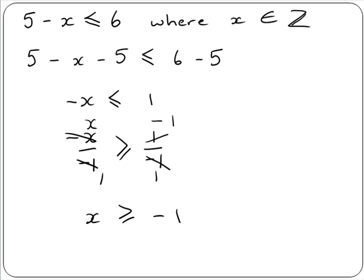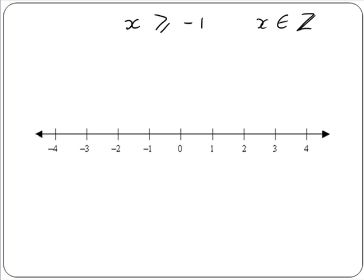Finally, we represent our solution on a number line. Our solution is x is greater than or equal to minus 1, and x must be an element of the integers. Starting at minus 1 — because minus 1 equals minus 1, it satisfies our inequality — we include minus 1 and then all integers greater than minus 1: 0, 1, 2, 3, 4. To show that all integers greater than 4 are also included, we put an arrow at the end of the number line to indicate that all integers as far as infinity are solutions.